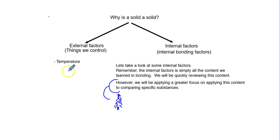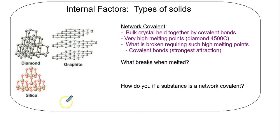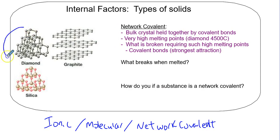First things first, a new type of solid. Our solids might be ionic, molecular, and we have a thing called a network covalent. This is probably the first time you've heard of this. A network covalent is a bulk crystal, a big chunk, held together by covalent bonds.